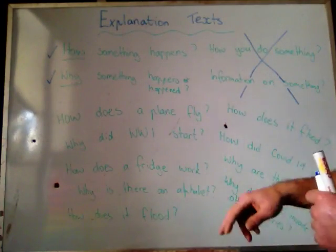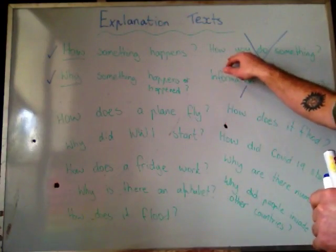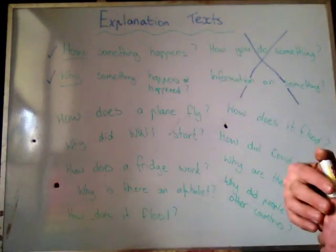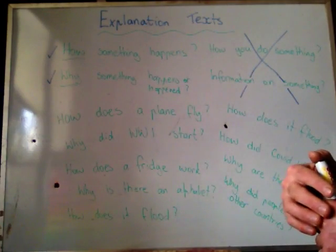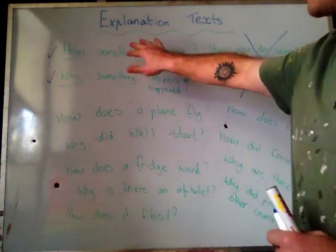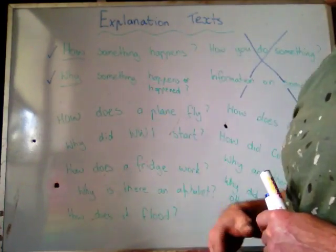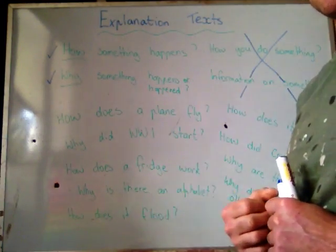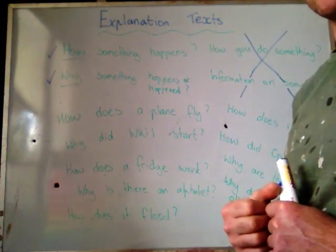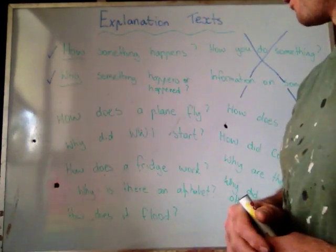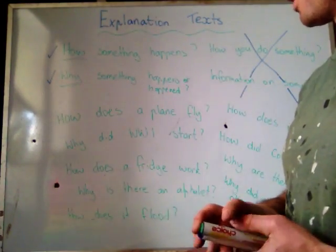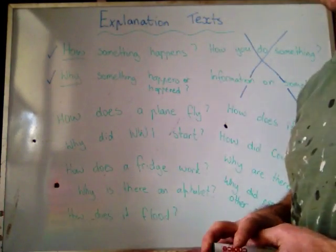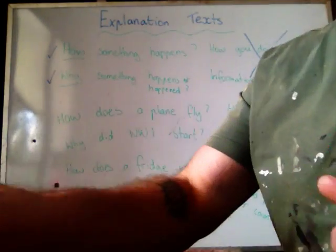Remember: if you are instructing somebody how to do something, that is a procedural. If you're telling people about a topic, that is an information report. We are focusing on explanation texts — you are explaining to somebody how things work and why things have happened, or why things work the way that they do. Hopefully we have a good week of writing, and in the next video we're going to focus on how we write our introductions. See you in that one.